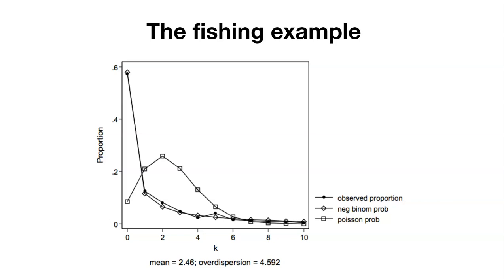In this case, we might think about using something like the negative binomial model as opposed to the Poisson model because it more closely matches the observed proportion that we looked at. These are two examples, the Poisson and the negative binomial, that work well for modeling count data.